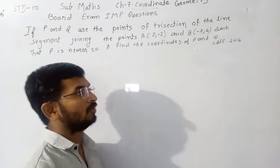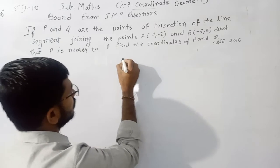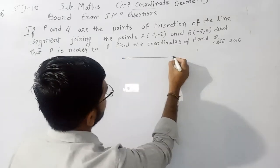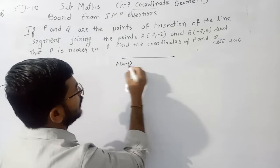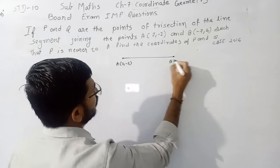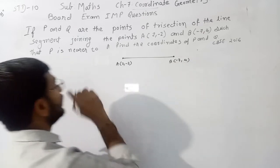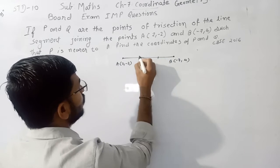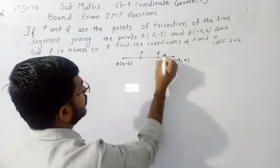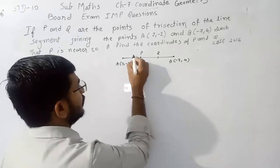First of all, we draw the figure based on the given instruction. A whose vertices is 2 and -2, and B whose vertices is -7 and 4, and P is nearer to A. Then we have two points P and Q, and P and Q are trisection of the line segment AB.